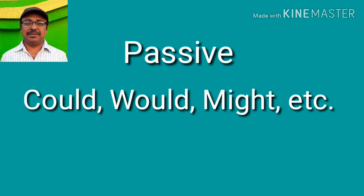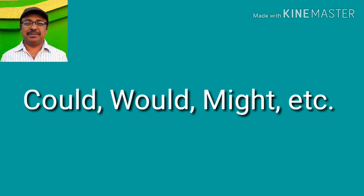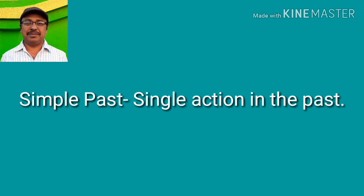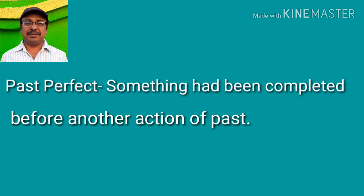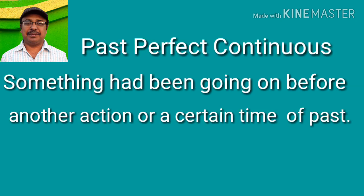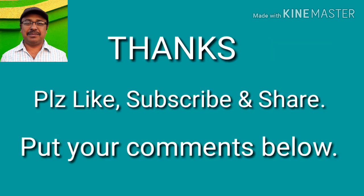Now, when you express some past events, think about what kind of sentence it is. If you are thinking of a single action, it is simple past. If something was going on, it is past continuous. If something had been completed before another action in the past, then past perfect. And if something had been going on before a certain action or certain time, then past perfect continuous. Thanks for listening.